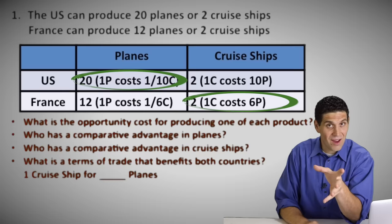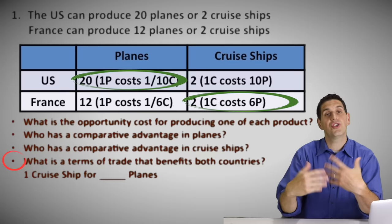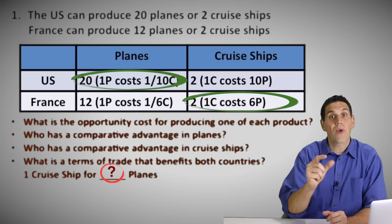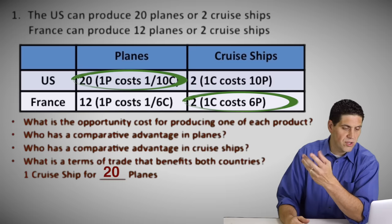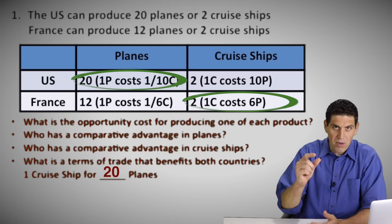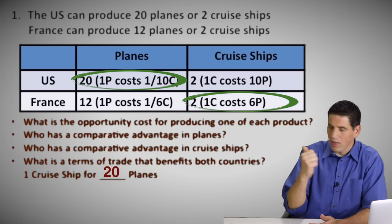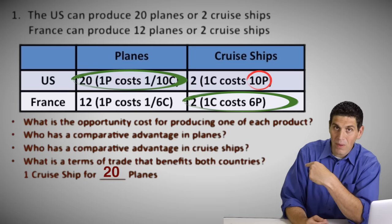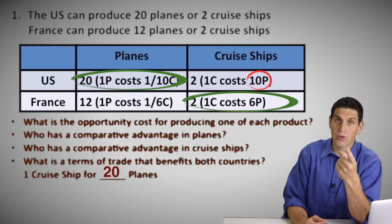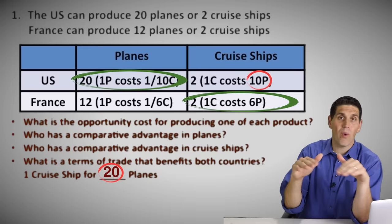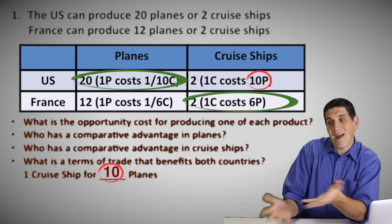Now we've got to go to the next level — something called terms of trade. Terms of trade is the idea that countries should trade, but they trade one cruise ship for a certain number of planes. There's a range of numbers that work for both countries, and some numbers that don't work. For example, one cruise ship for 20 planes — France would love that, but the U.S. would never go for it. If the U.S. produces cruise ships on their own, it costs them 10 planes. Why would they ever give up 20 planes for one cruise ship? So any number above 10 doesn't work.